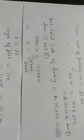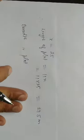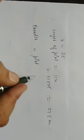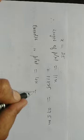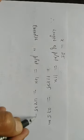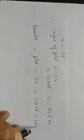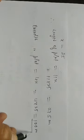The breadth of the plot is equal to 4x, which is 4 into 25, equal to 100 meters.